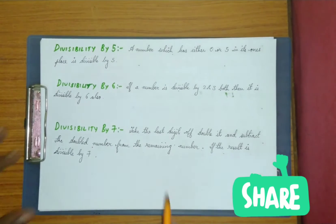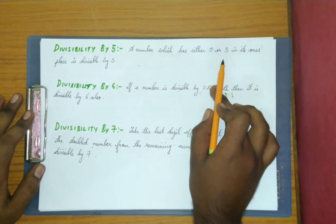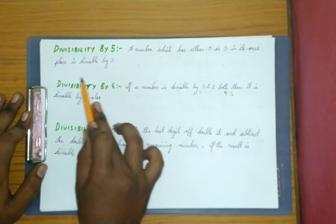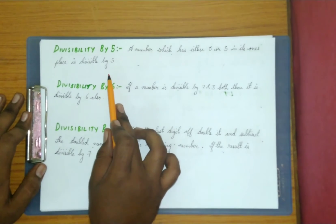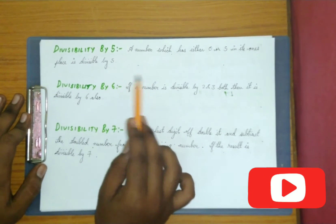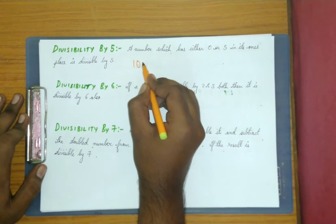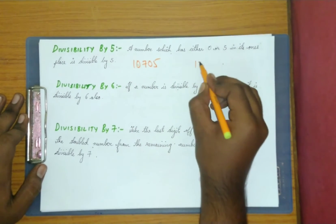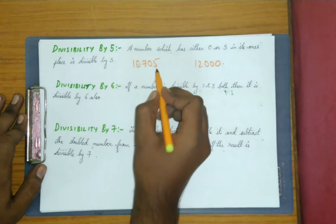A number which has either zero or five in its ones place is divisible by 5. For example, take the number 10705 — and one more example: 12000.